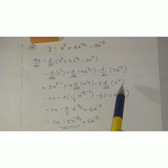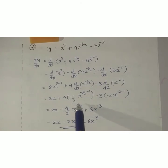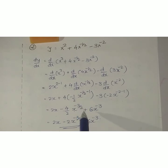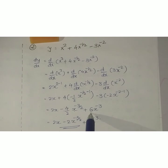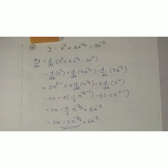Continuing: we get 2x for the first term. For the second term: 4 × (−1/2) × x^(−1/2 − 1) = −2x^(−3/2), but minus times minus gives plus, so +2x^(−3/2). For the third term: −3 × (−2) × x^(−3) = +6x^(−3). Final answer: dy by dx = 2x + 2x^(−3/2) + 6x^(−3).